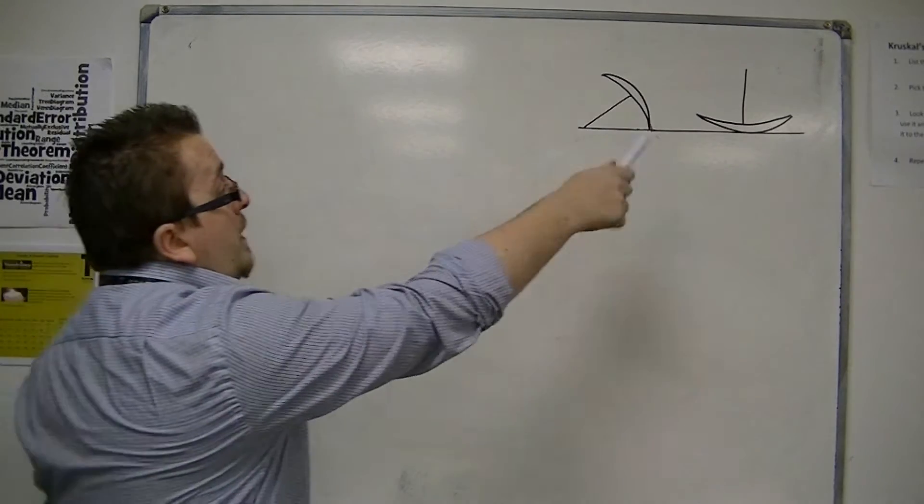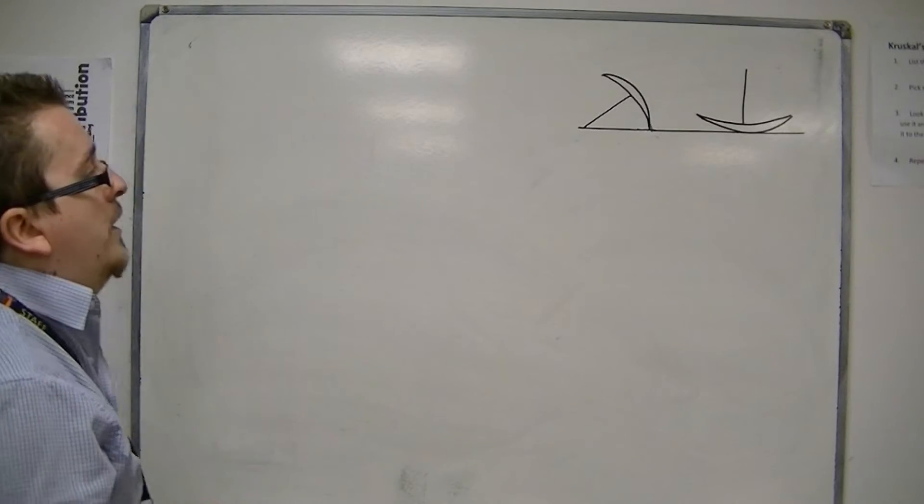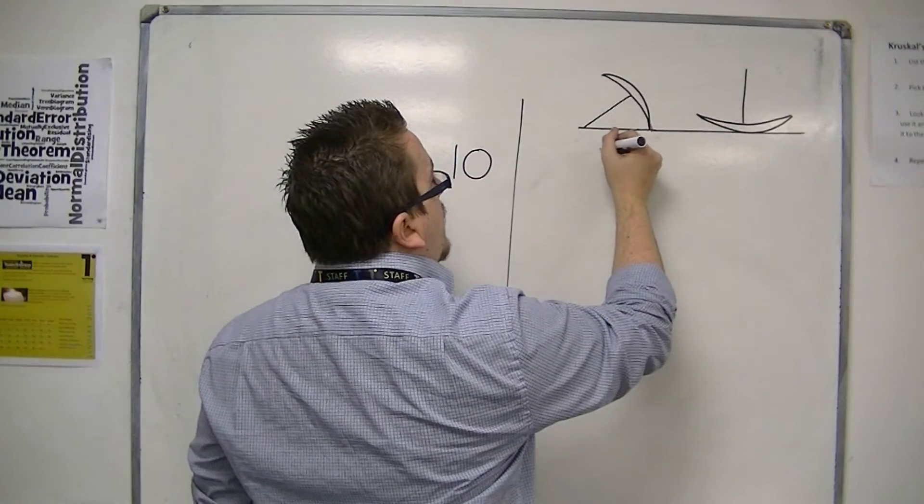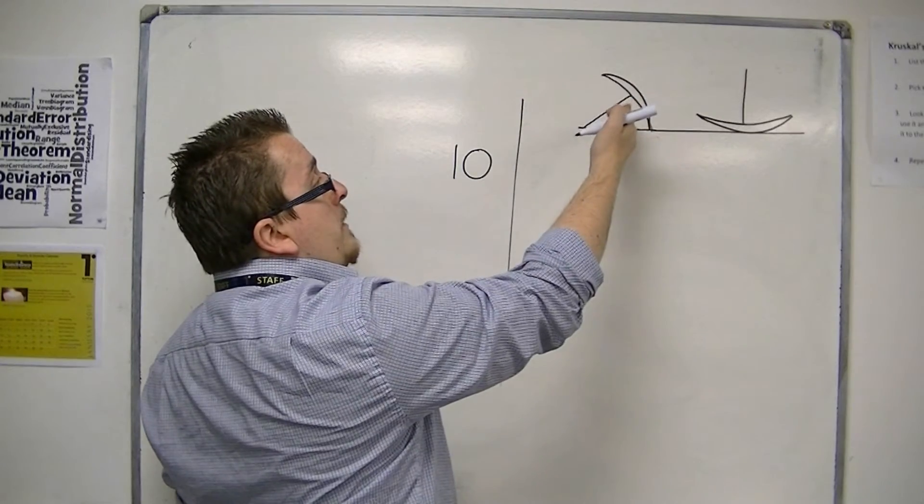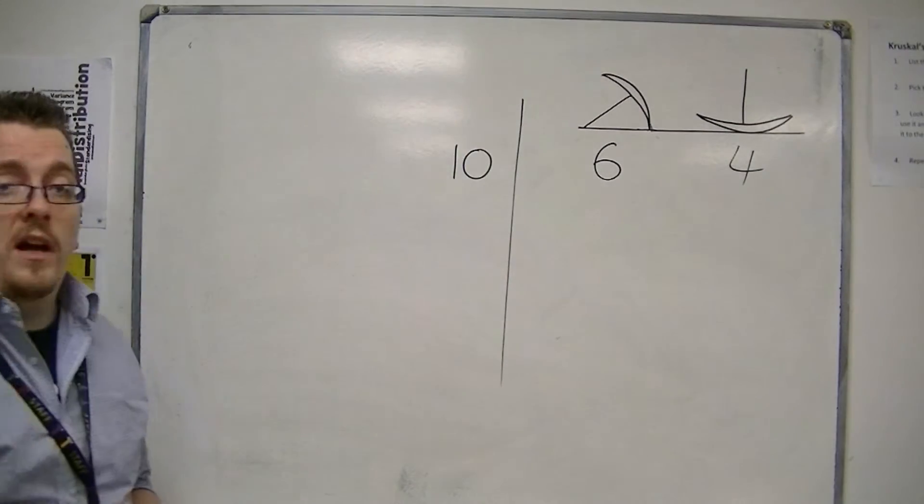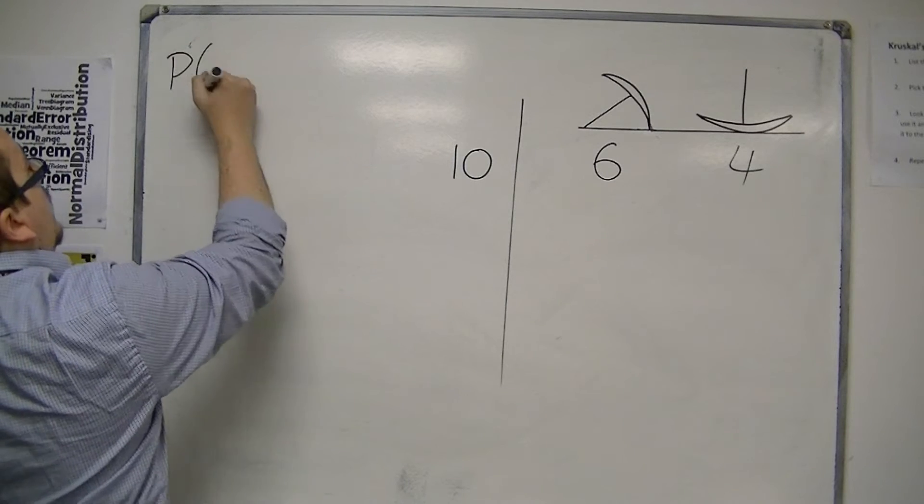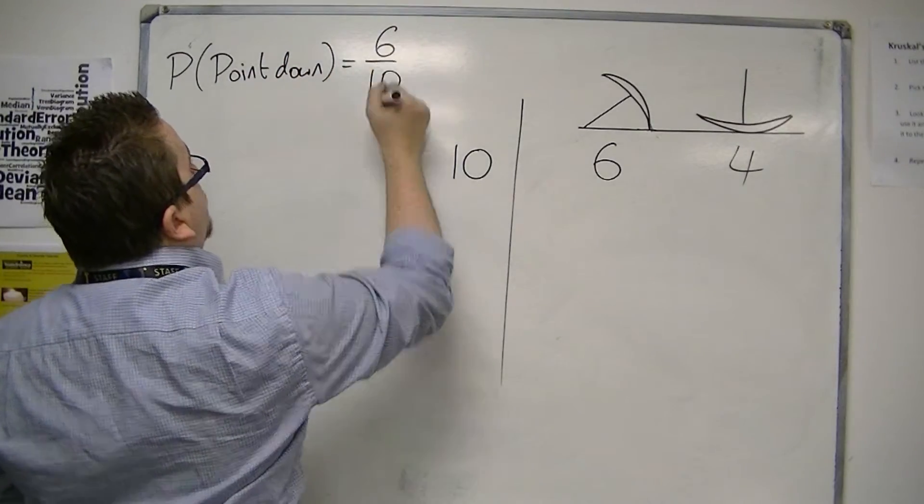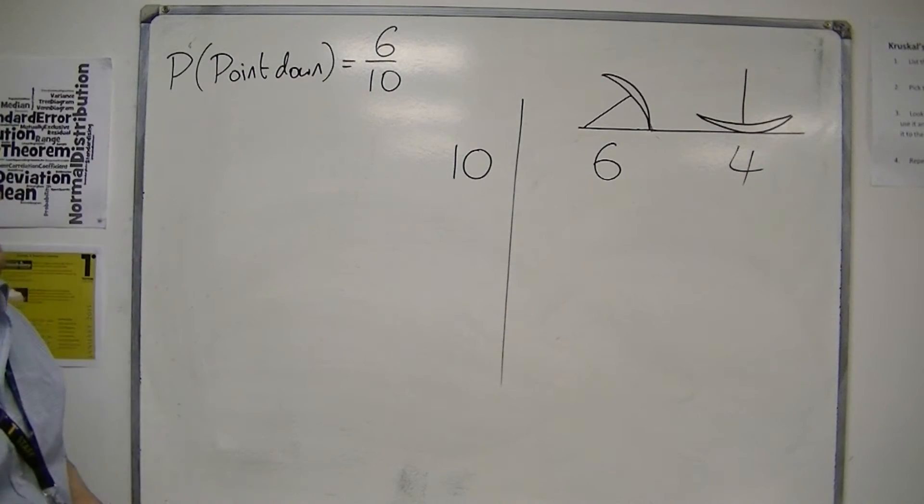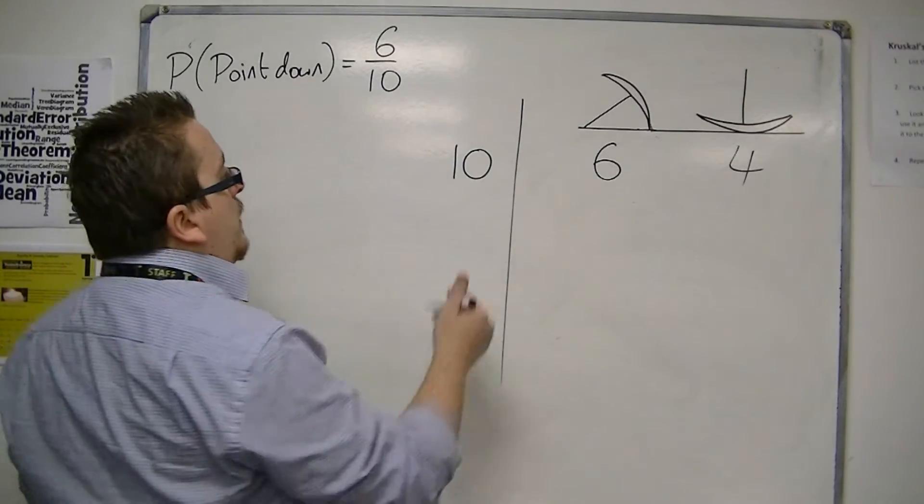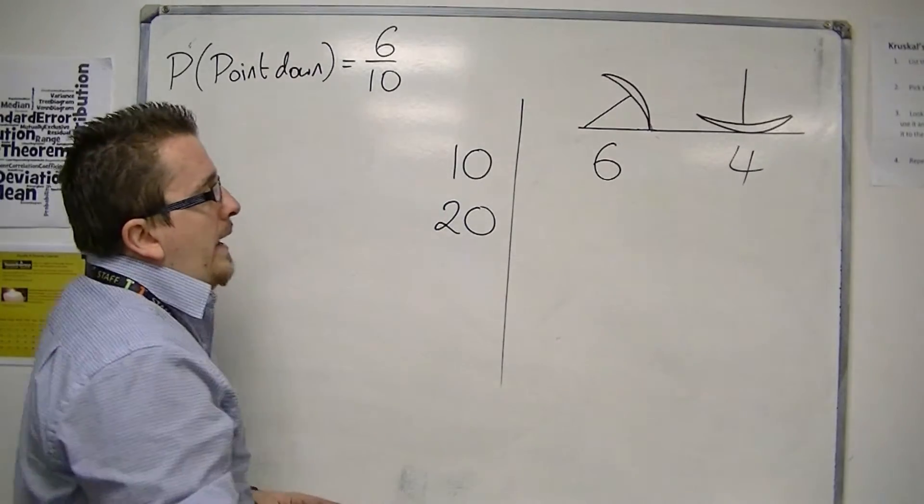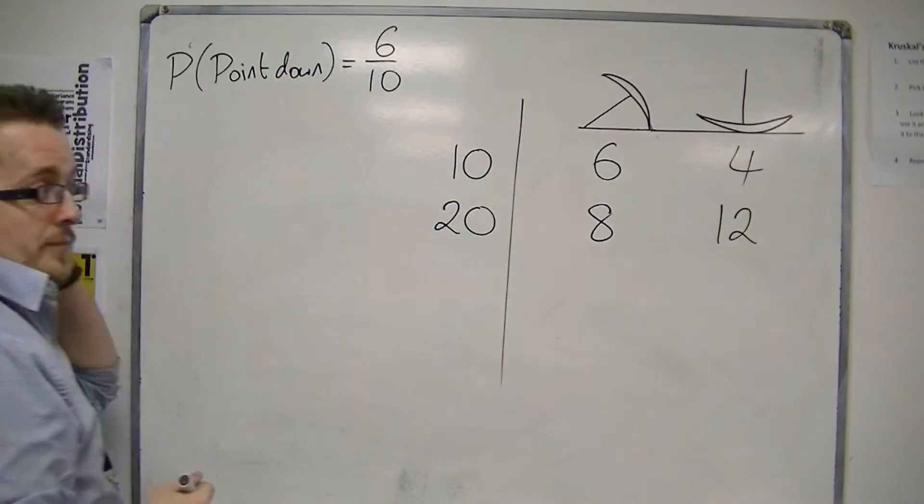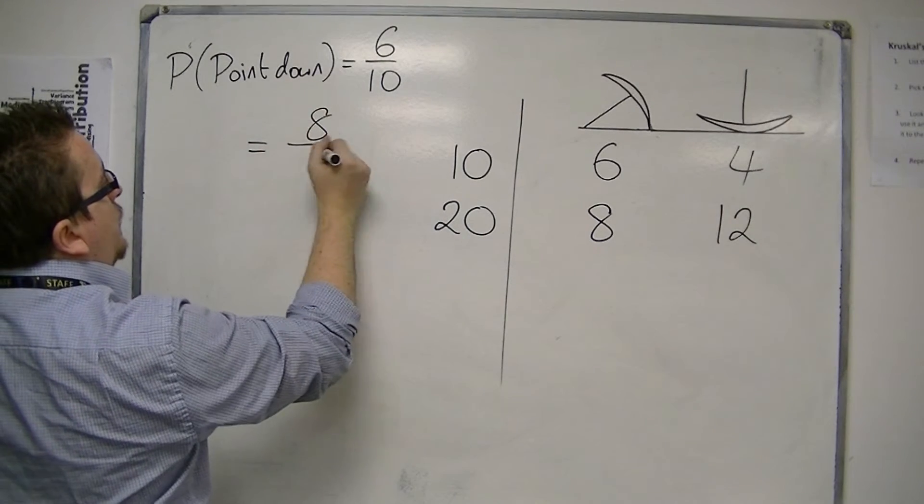With dropping a drawing pin, for example, it may well be that after ten trials we find that we've got six that landed point down and four that landed point up. So the probability of getting point down currently is six out of ten. But we may not be convinced by just doing ten trials. So we do another ten trials. We're now at twenty trials, and over the twenty trials we actually find that we've got eight and twelve. So over twenty trials, we now have eight out of twenty.